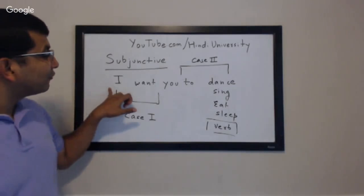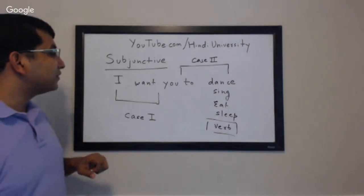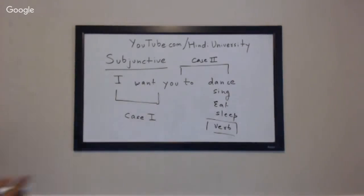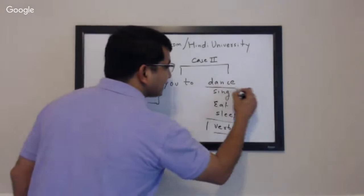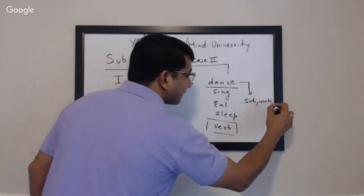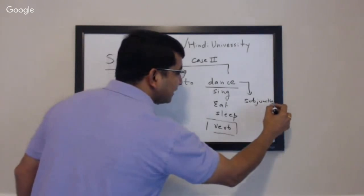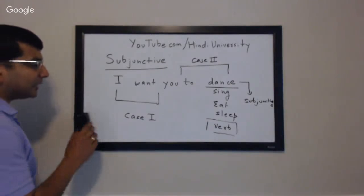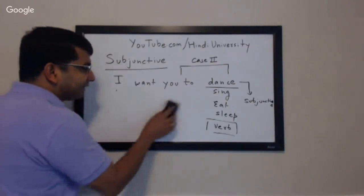When you combine both constructs together, you come across scenarios like 'I want you to dance.' In this case, the second verb becomes your subjunctive, and how you conjugate it becomes very important. The concept should be fundamentally clear — we'll cover several examples so that by the end of this class you'll have very good clarity. Let me quickly erase and start with the definition.